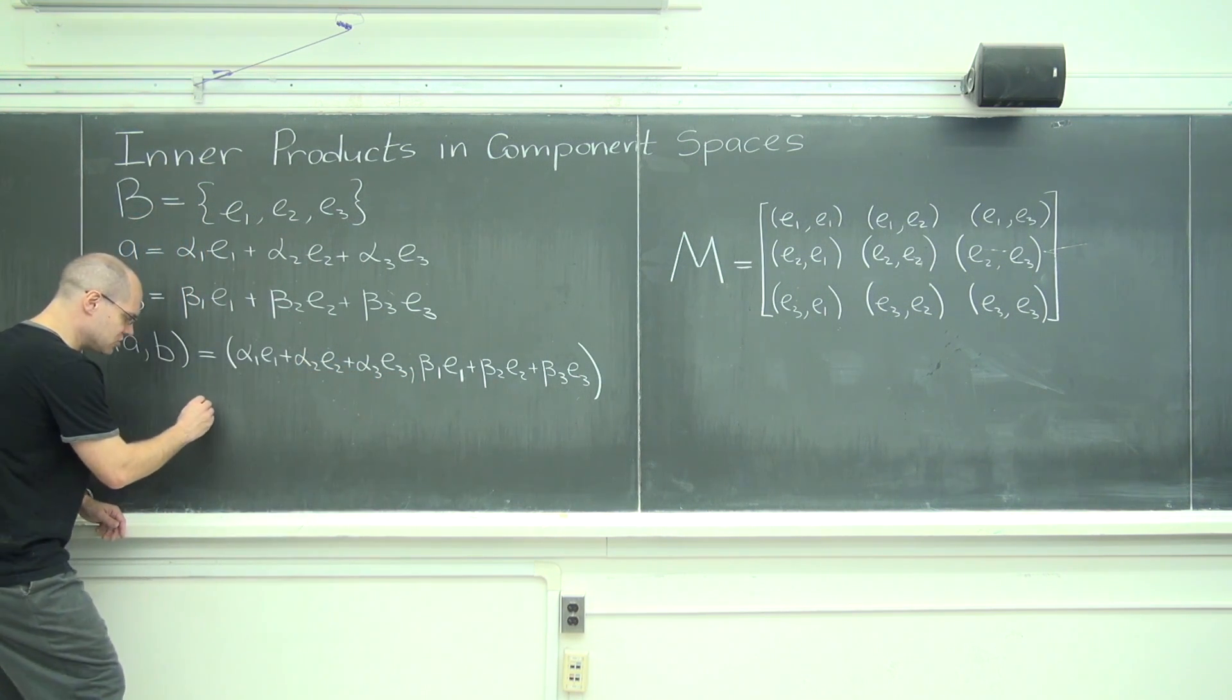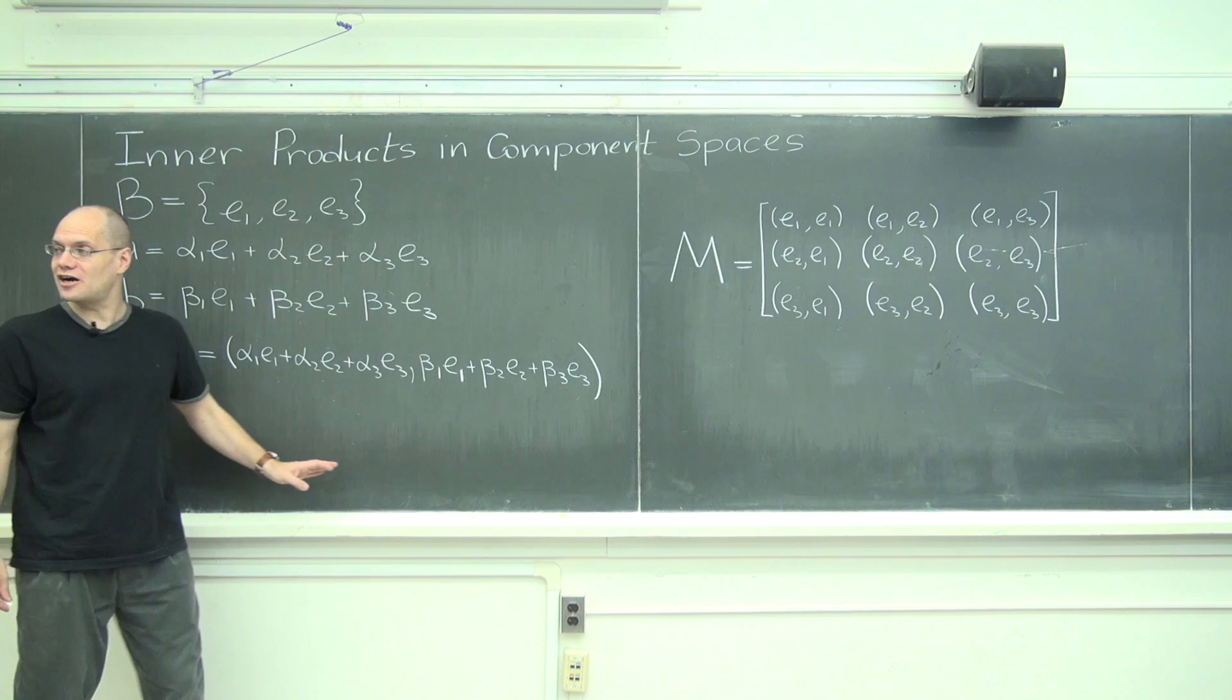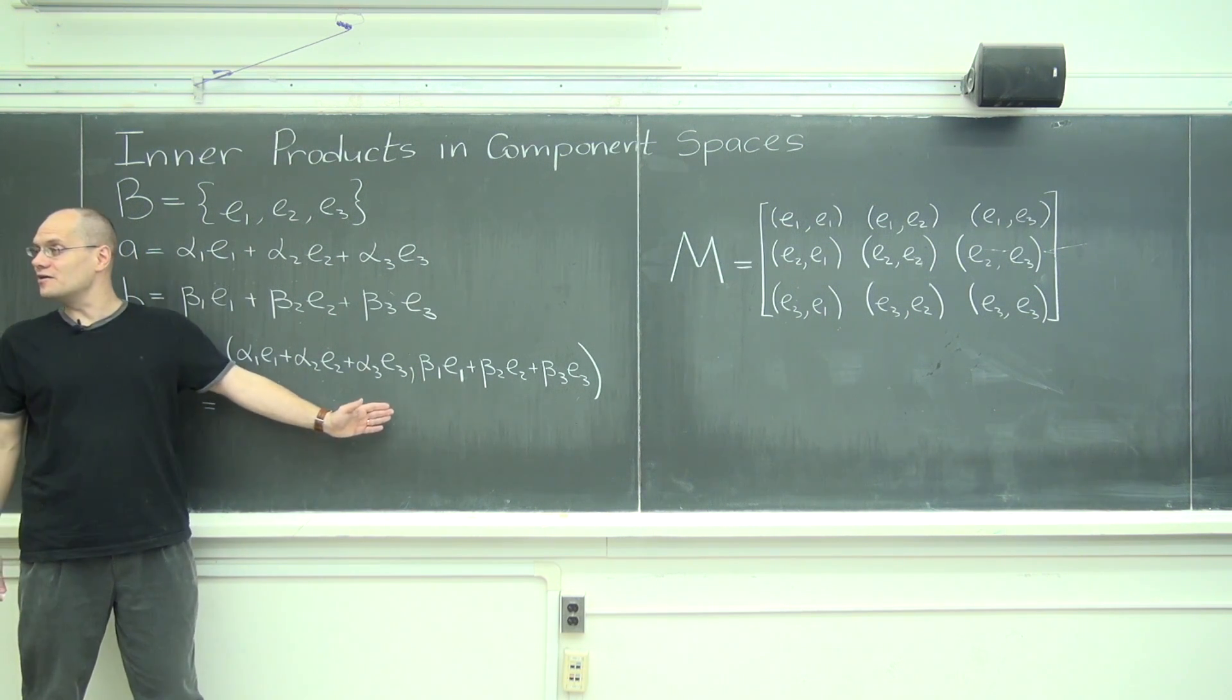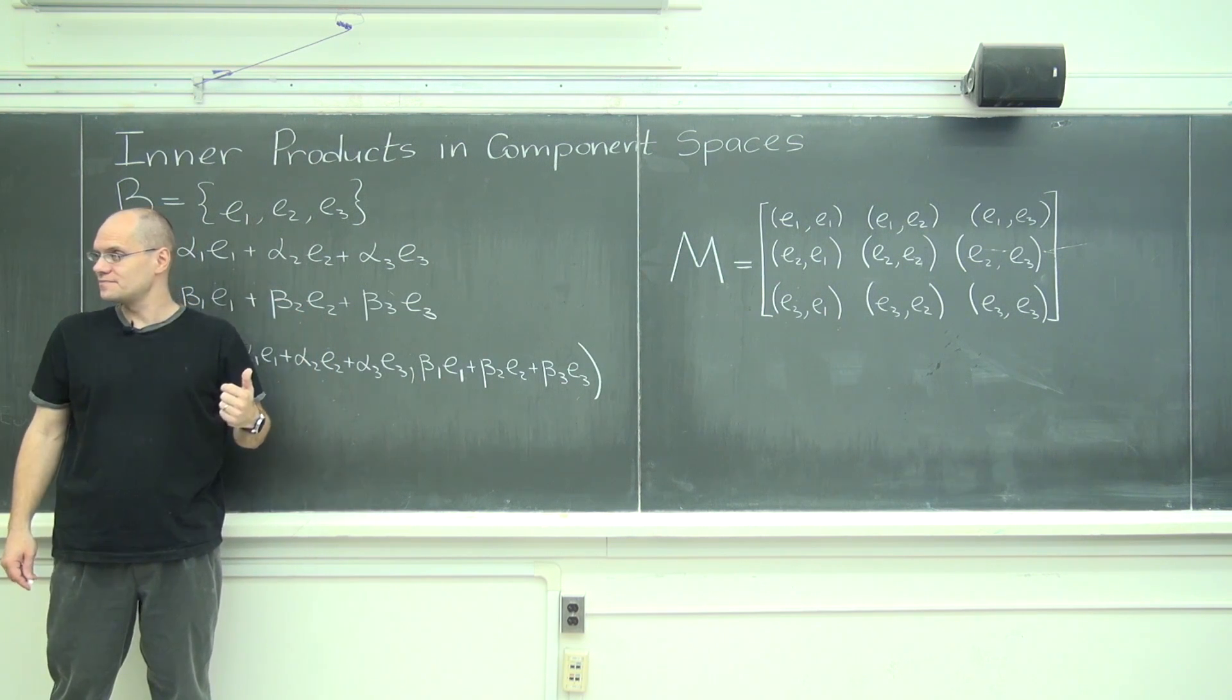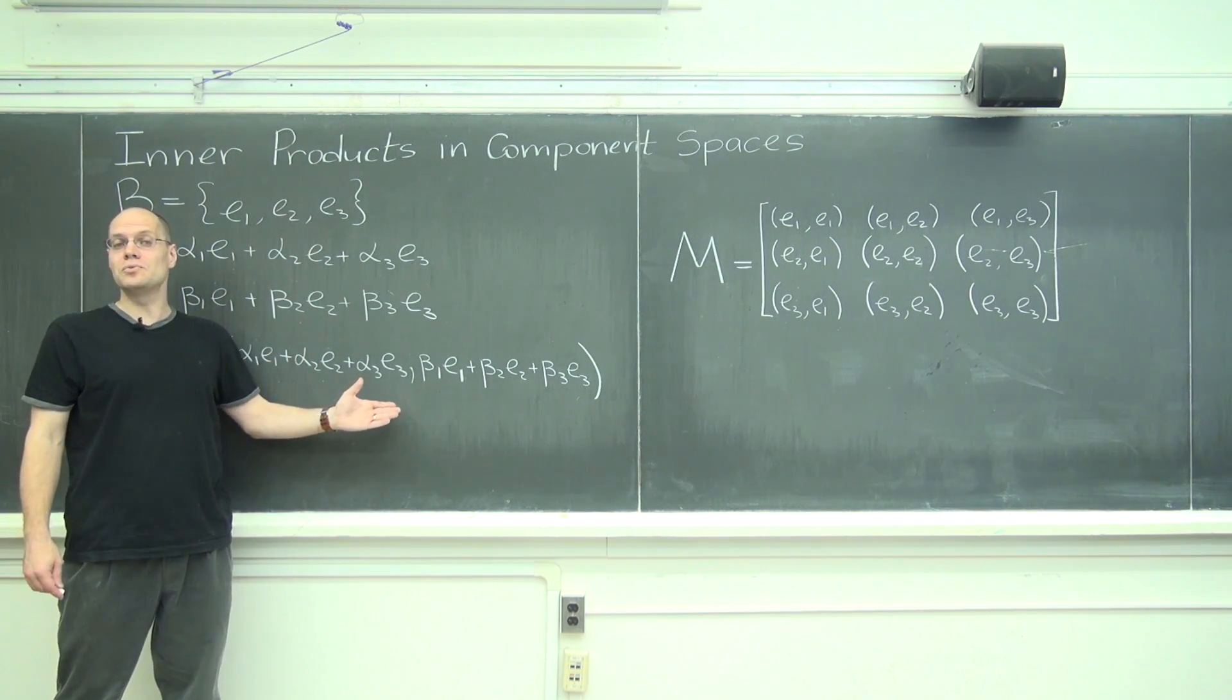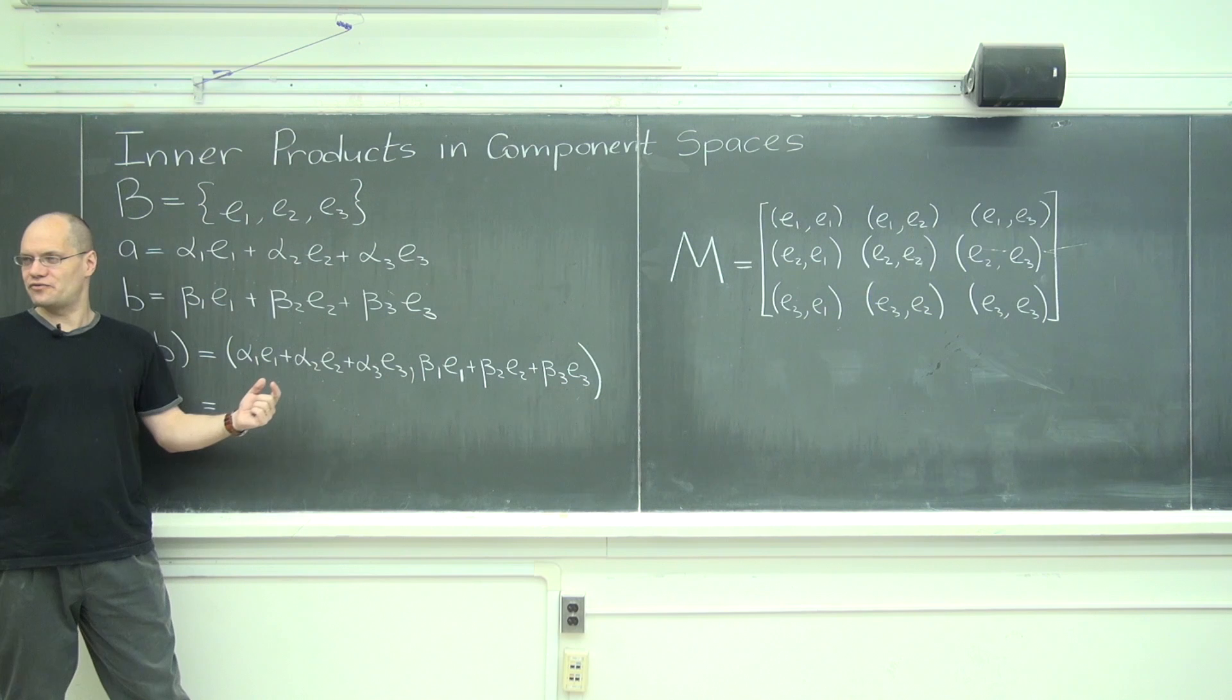And now we're going to do a massive foil. Do you guys agree with me? Why? Because the inner product is distributive. So that's actually all we really need here is the distributive property.